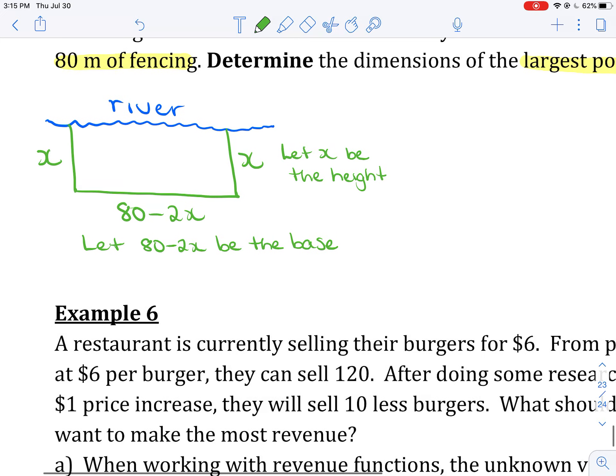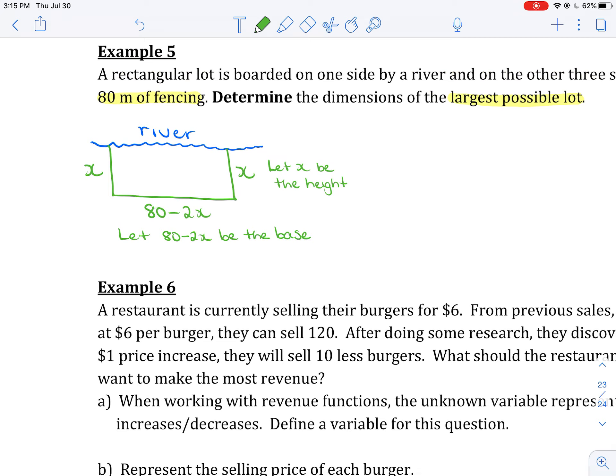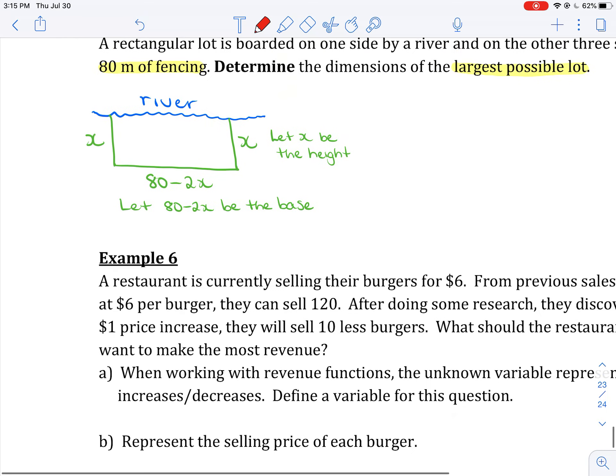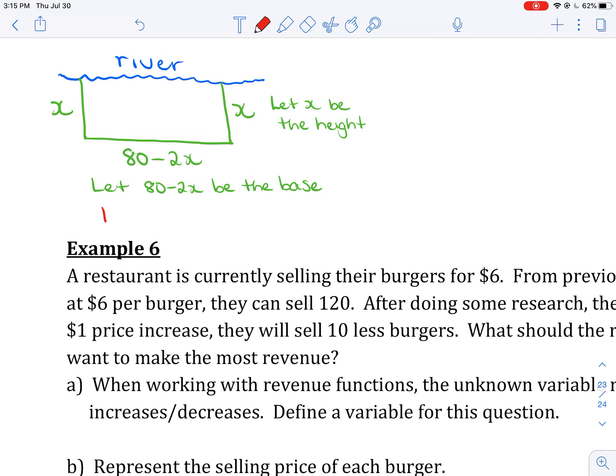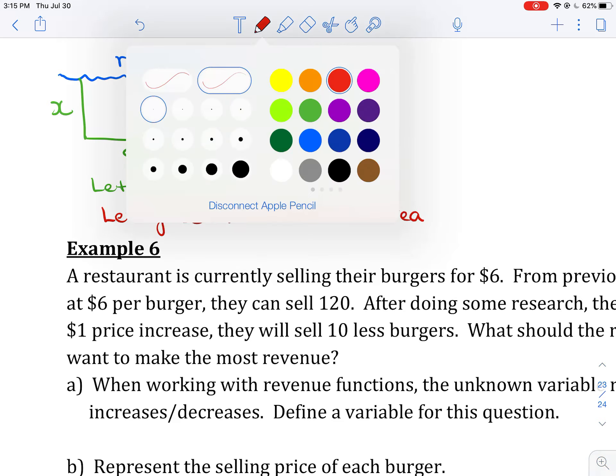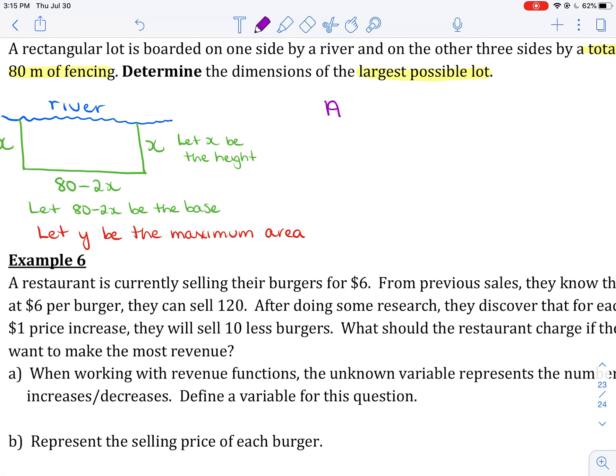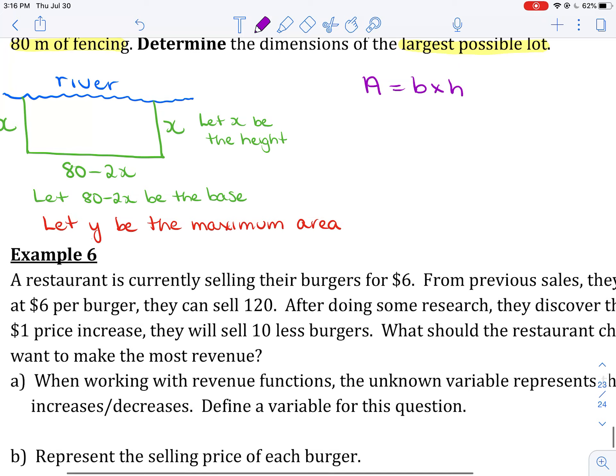Now, if I want the largest possible lot, that means I need the largest possible area. So we always let y be our min or our max. So we let y be the maximum area. How do we find area? Area of a rectangle is still base times height. Even though that one side is river, that doesn't matter. That only affects perimeter. Area is still base times height. So I've called the area y. So y is going to be the base times the height. That's 80 minus 2x times x. Doesn't matter what order I multiply in. So I'm going to go x times 80 minus 2x.